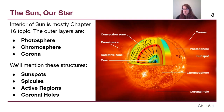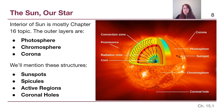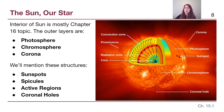The terms we are going to introduce in this video and explore more throughout this chapter are the outer layers of the sun: the photosphere, the chromosphere, and the corona, along with structures we see in those layers — sunspots, spicules, active regions, and coronal holes. All of these terms will be introduced briefly here and explored in more detail in upcoming videos.